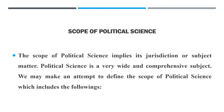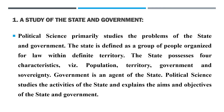I will share different aspects with you. Very first is study of the state and government. Political science primarily studies the problems of the state and government. The state is defined as a group of people organized for law within a definite territory. Note down here a very important information about state: state has four elements — population, territory, government, and sovereignty — and each of these elements is compulsory.